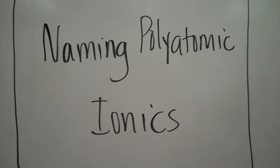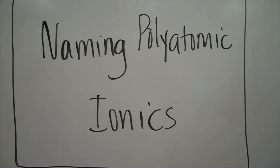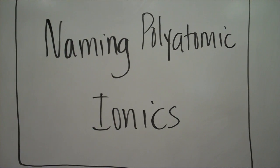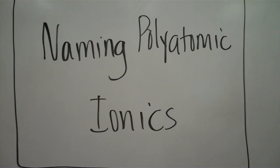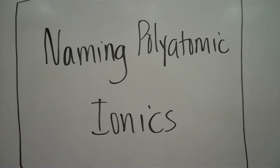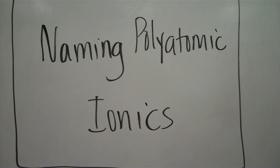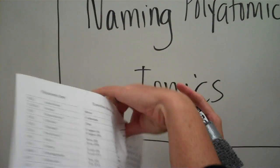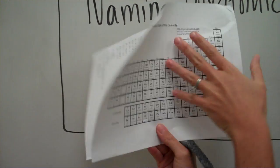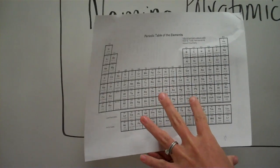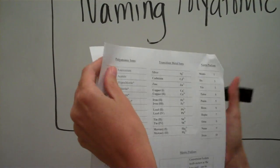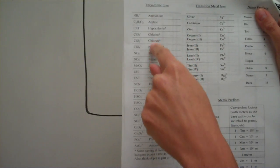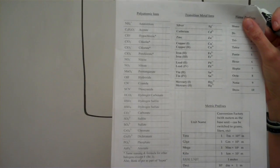Today we're going to be talking about naming polyatomic ionics. What we did last time is we just put two elements together. We're going to take this a step further today and use the polyatomic ions on the back of your handout. We've given you this periodic table, and on the back on the left-hand side there's a list that starts with ammonium and then alphabetically lists all the polyatomic ions.